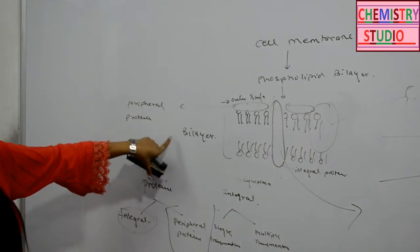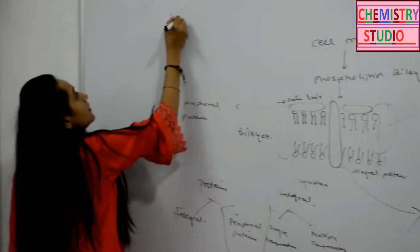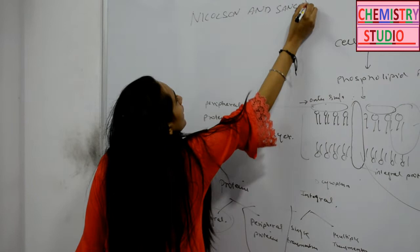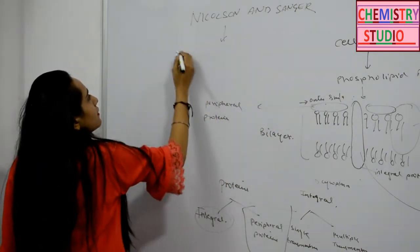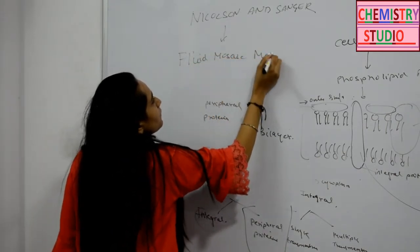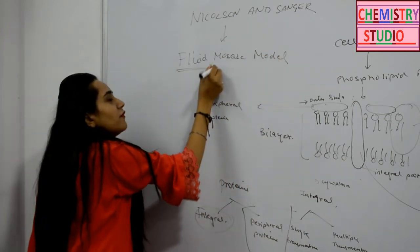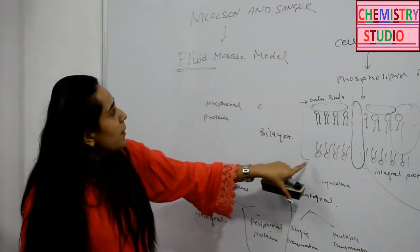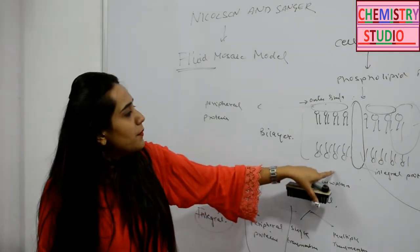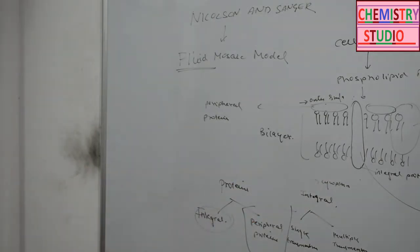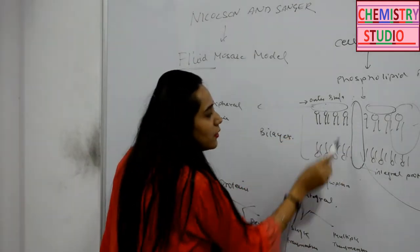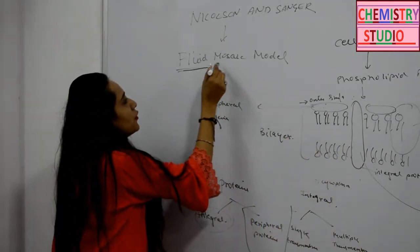The structure of this membrane was described by Nicholson and Singer, and they called this model the fluid mosaic model. It is called 'fluid' because the proteins are free to move laterally. It is called 'mosaic' because there are many types of proteins in the membrane — peripheral proteins and integral proteins.